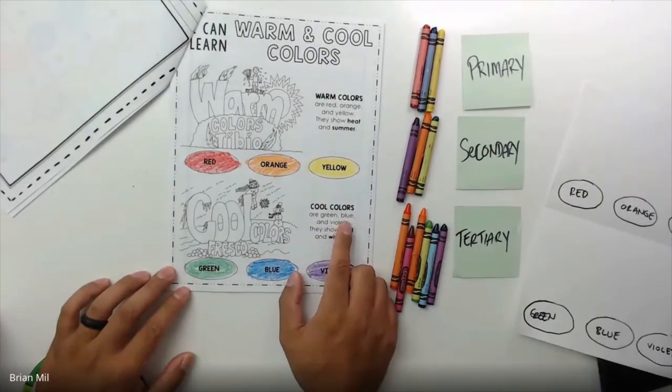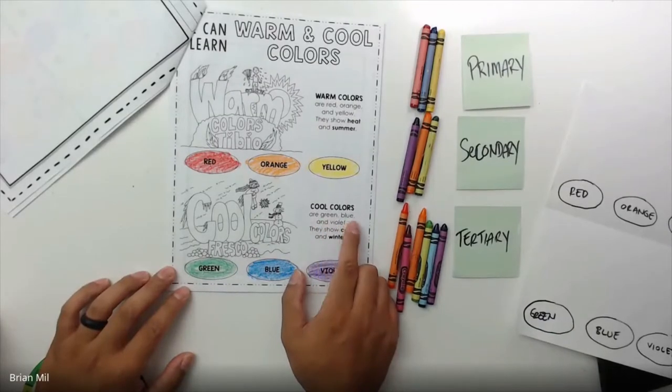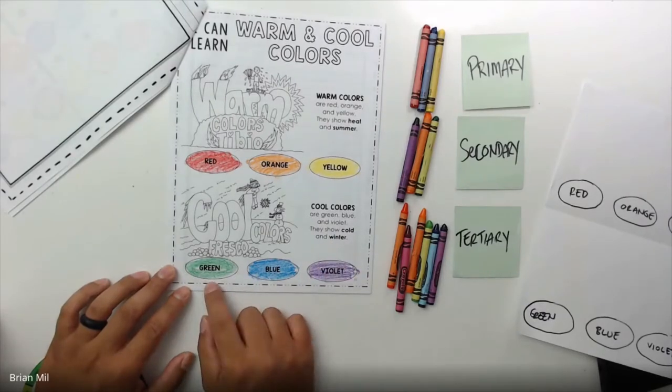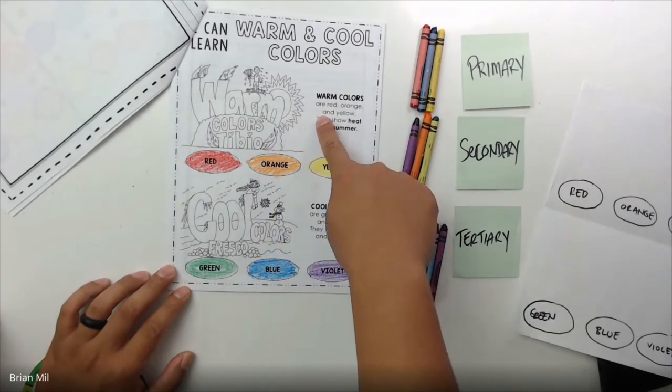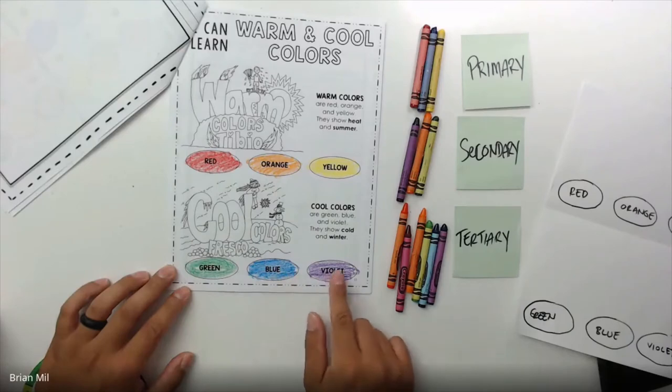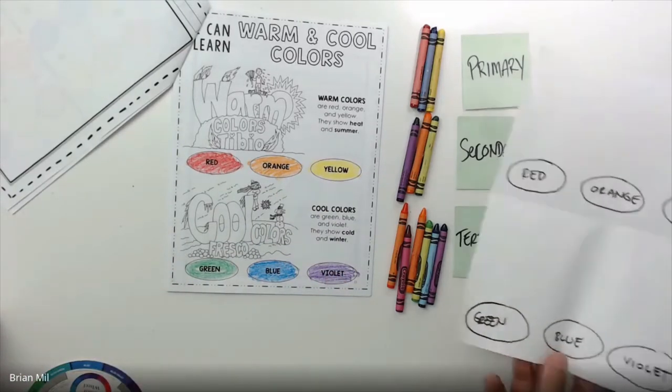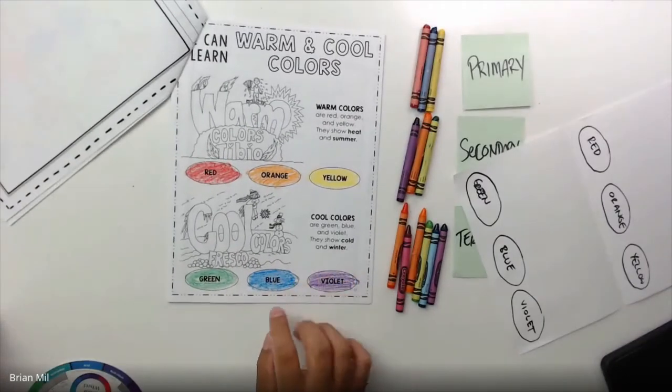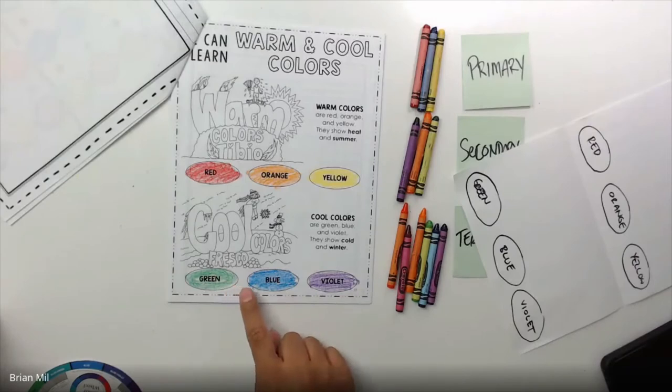So down here, it says cool colors. The cool colors are green, blue, violet. Violet is another word for purple, if you guys did not know that by now. And they show cold and winter types of colors. So kind of same thing that we did up here for warm, but instead do it down here. So green goes here, blue goes here, and violet goes here. If you did on a blank sheet of paper, it doesn't matter which order you do it in, as long as you have it all down there. But this is what it looks like right here.